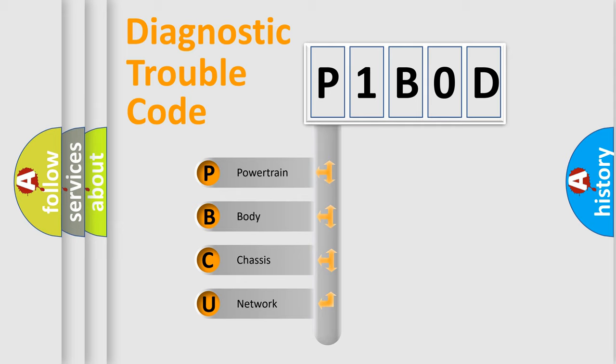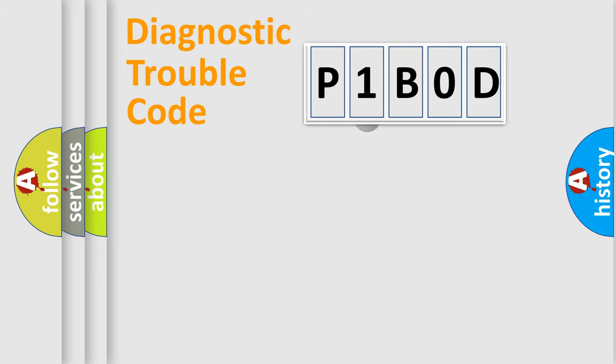We divide the electric system of automobile into four basic units: powertrain, body, chassis, and network. This distribution is defined in the first character code.